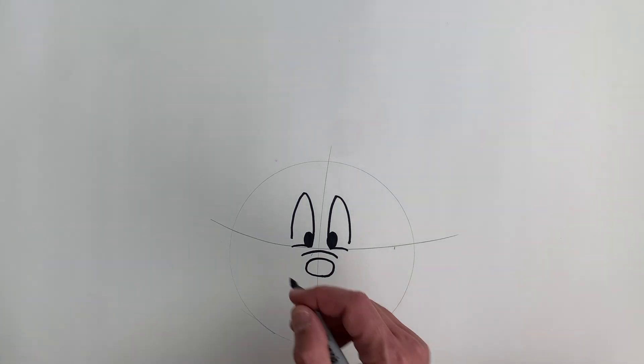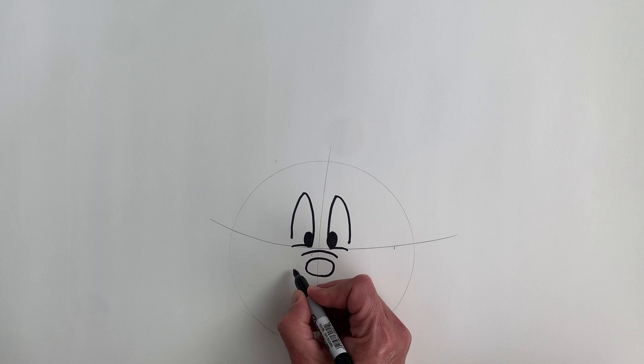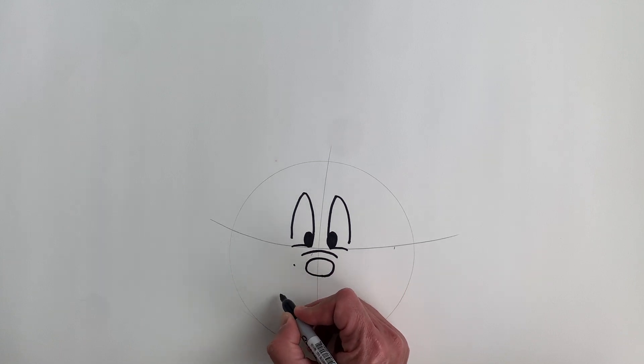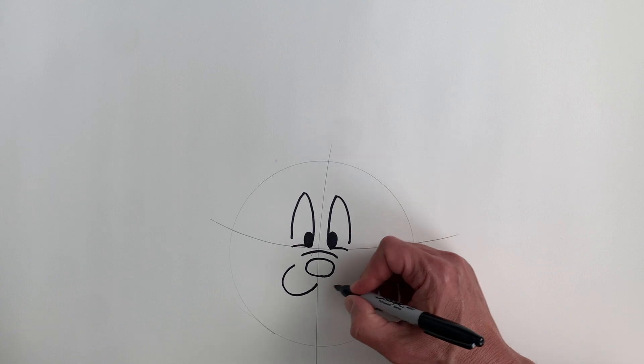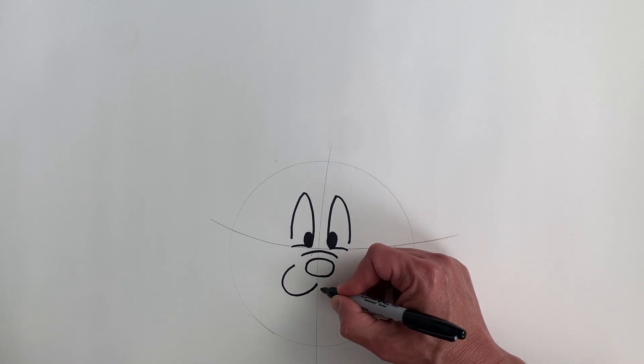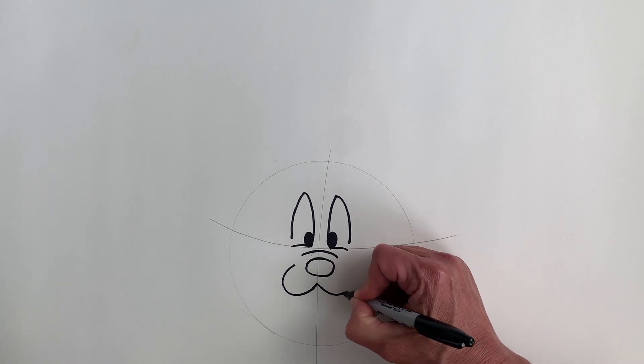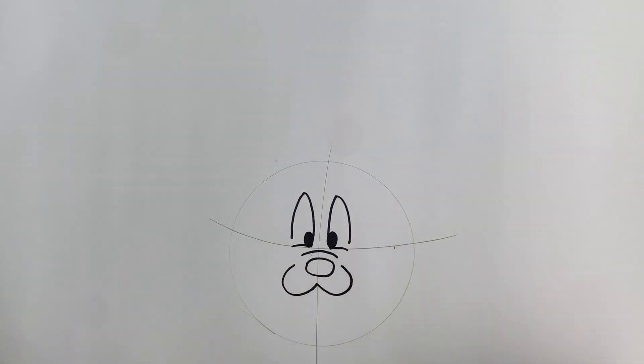All right, so now we can start drawing Michelangelo's mouth. So right around here, put your pencil or marker right here, and you're going to make a U shape. Like so. So you see that U there. And I want you to do the same on the other side as well. You can start over here, you can start over there. Let's start here, so they join together, and we can see it go around like that.